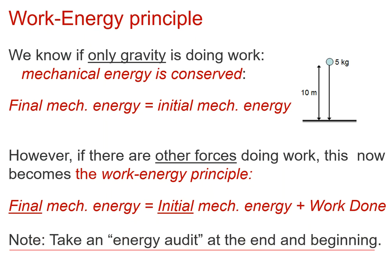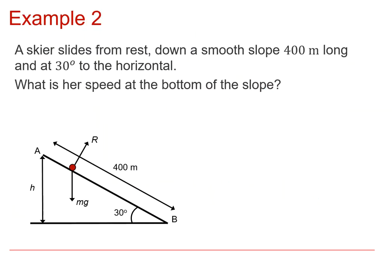A good thing to do in any problem is to take an energy audit — count up the energy at the start and at the end, and the difference must be the work done on the system. Here's an example: a skier slides from rest down a smooth slope, 400 metres long at 30 degrees to the horizontal. We want to find her speed at the bottom. The slope is smooth, meaning no friction. The normal reaction acts perpendicular to the motion, so it does no work. Therefore the total mechanical energy is conserved.